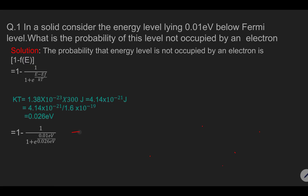When we substitute the details, we get 1 minus 1 upon 1 plus e raised to 0.385. When we calculate, the probability that the state is not occupied by electron comes out to be 0.595.